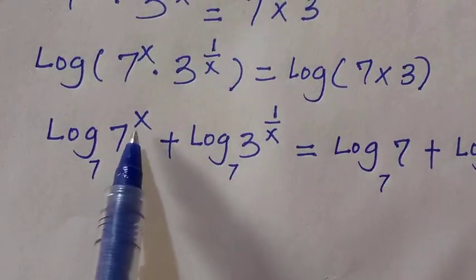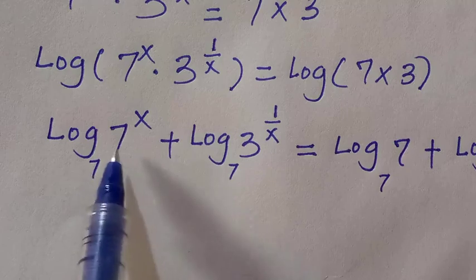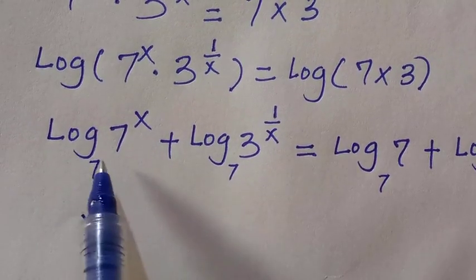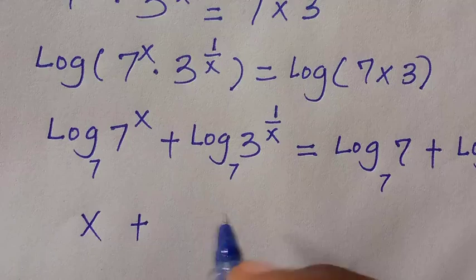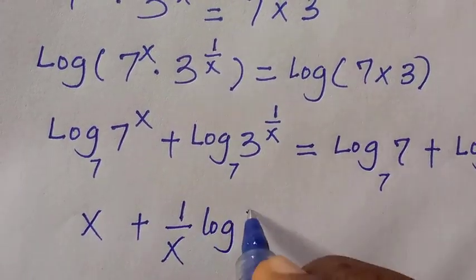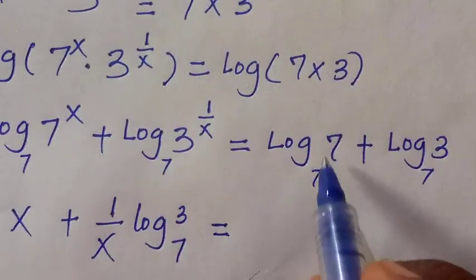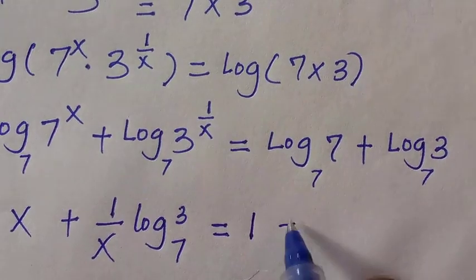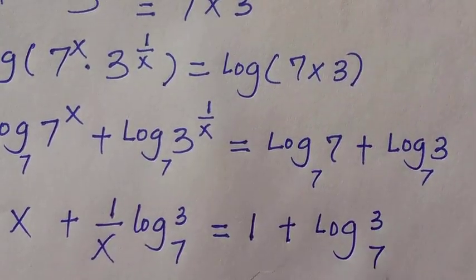With base 7 applied, log of 7 to the power x base 7 simplifies to x, because log base 7 of 7 equals 1. Then we have plus 1 over x times log 3 base 7, equals 1 plus log 3 base 7.